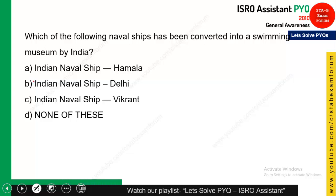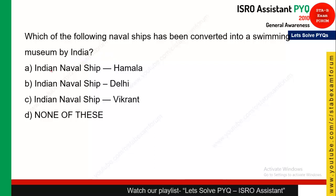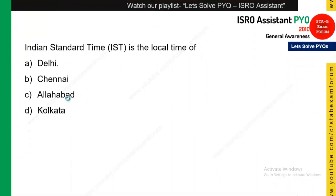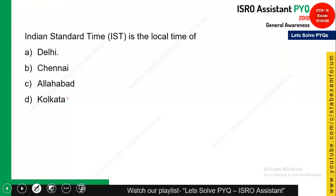The next question says: which naval ship has been converted into a swimming museum by India? The options are INS Hamla, INS Delhi, INS Vikrant, and none of these. These are very old ships brought from various countries, but INS Vikrant was converted into a swimming museum because it was decommissioned by the navy at that time. So option C, INS Vikrant, was the right answer.